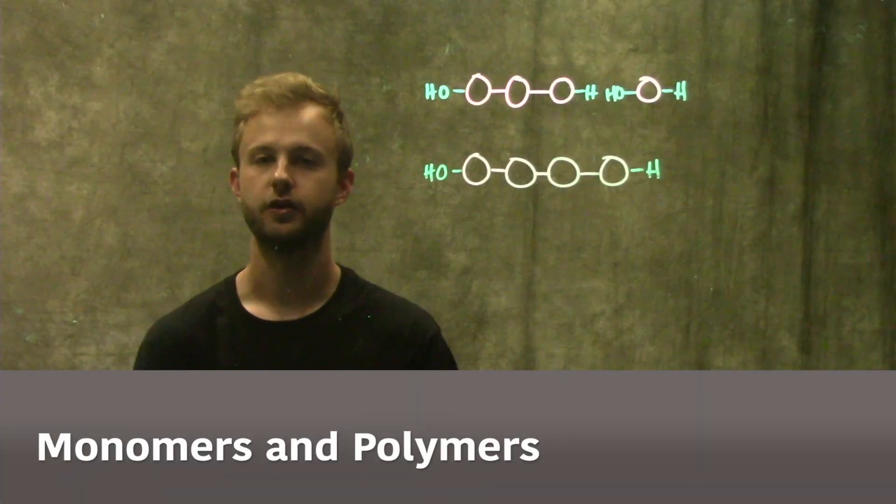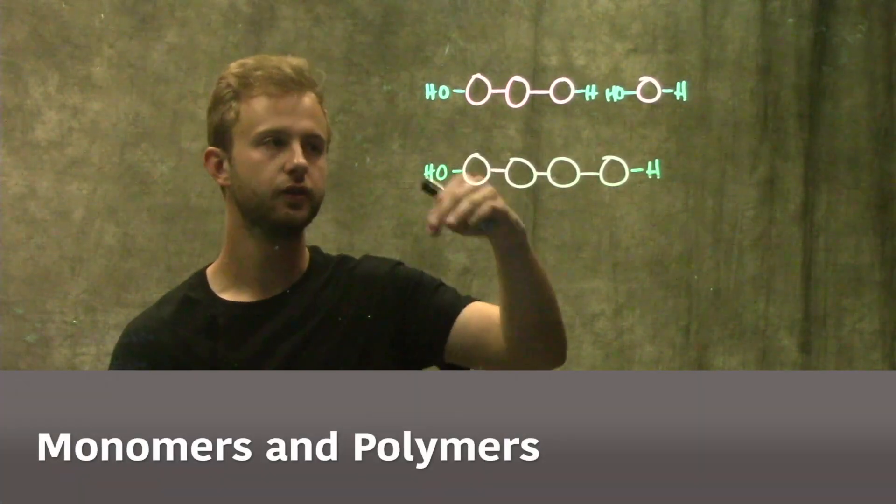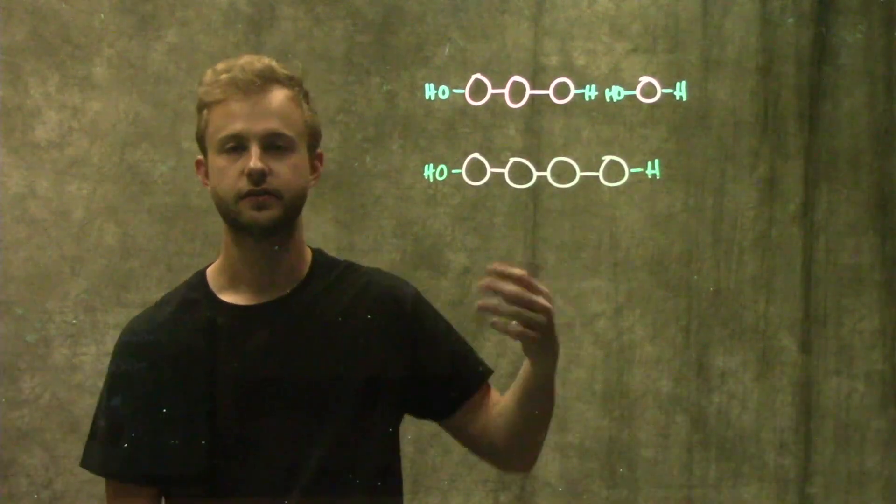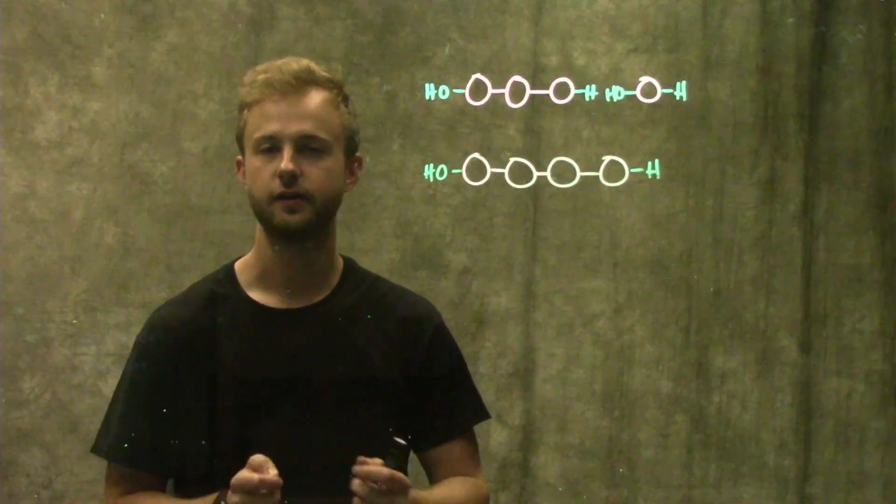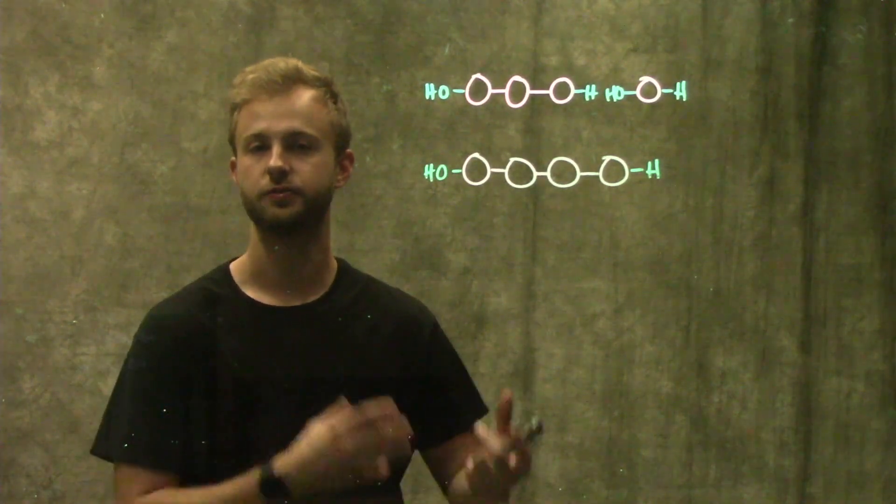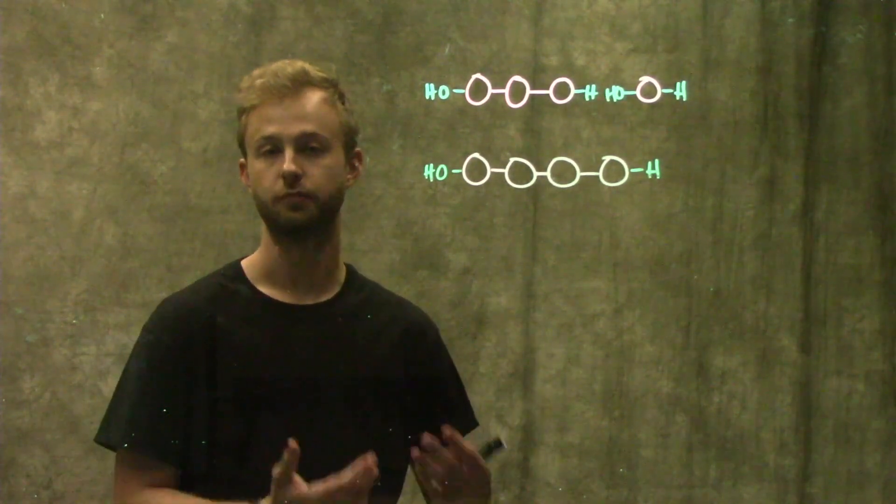This video is about monomers and polymers. I've drawn a simple molecule here to help illustrate this concept. Monomers are the small individual pieces that we put together to make a bigger molecule, which is called the polymer.